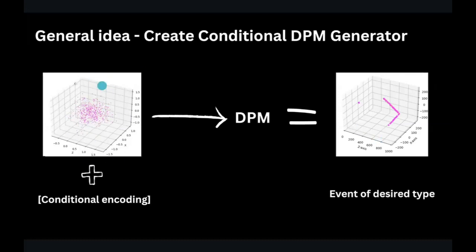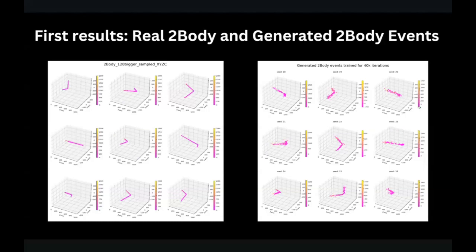So the idea is like this. We have a noisy point cloud, plus some conditional encoding, for example, type of event. We put it in DPM, Diffusion Probabilistic Model, and we get the desired shape. First, the results are represented here. I just take a real two-body events like this. No, they are simulated, but in our terms they are real. And I have changed the model to create simulated events. So a picture on the right hand is simulated events of these events. So they are completely new. And we can see that they're pretty much the same as this. Maybe not so dense, but something near.